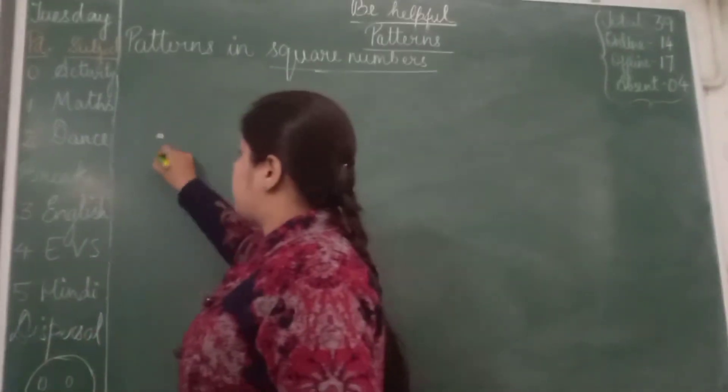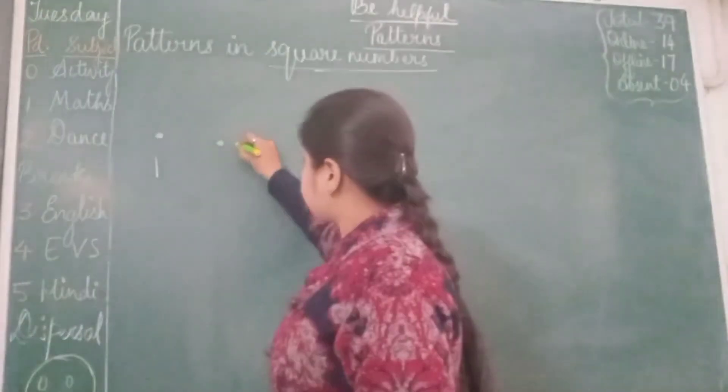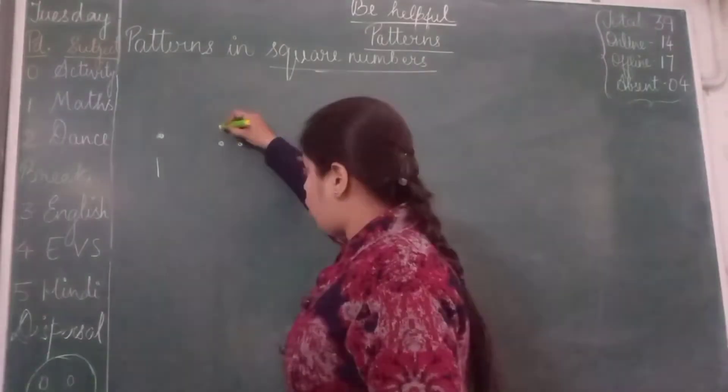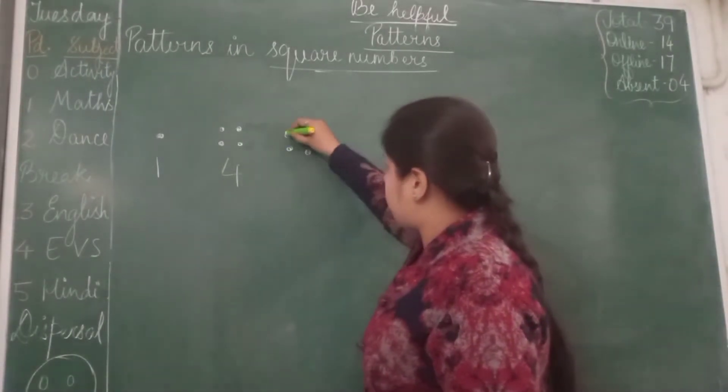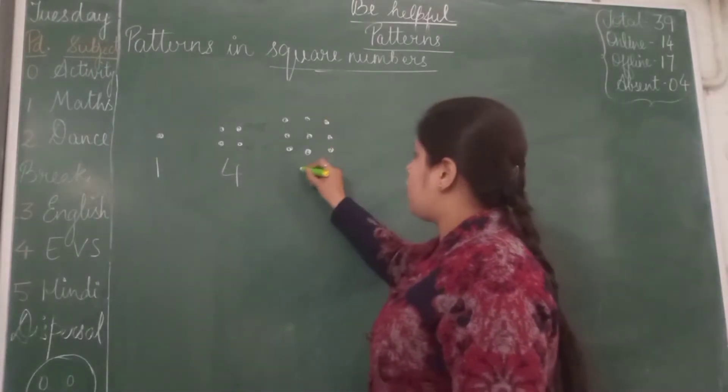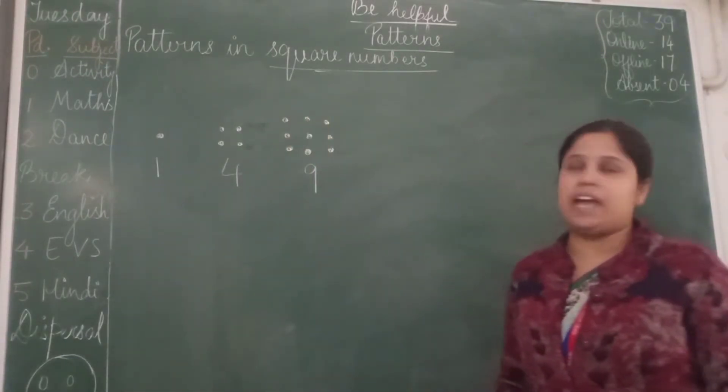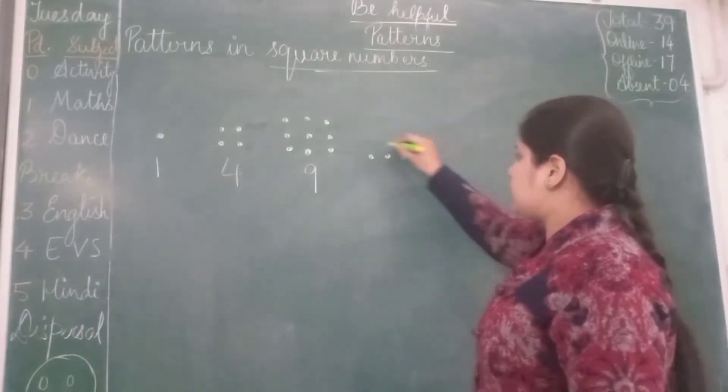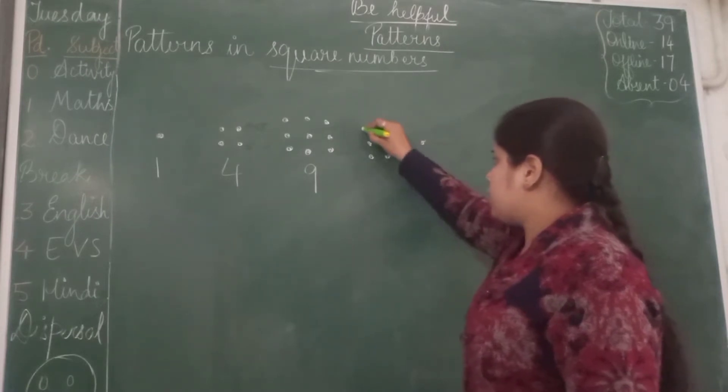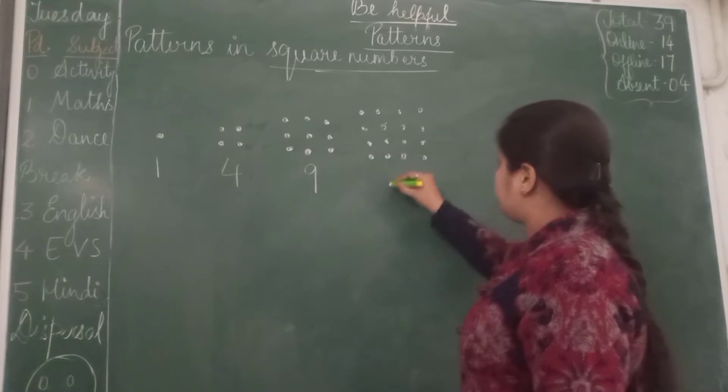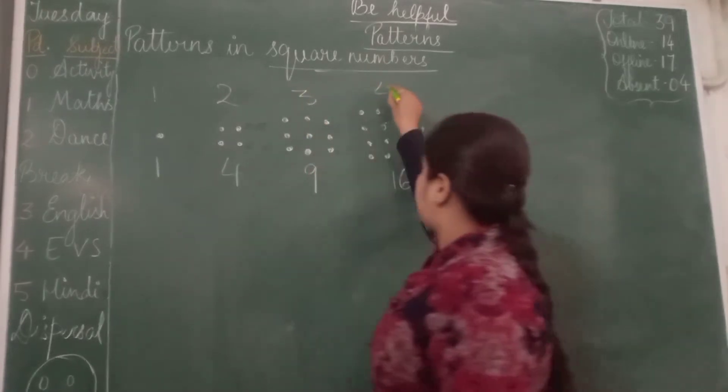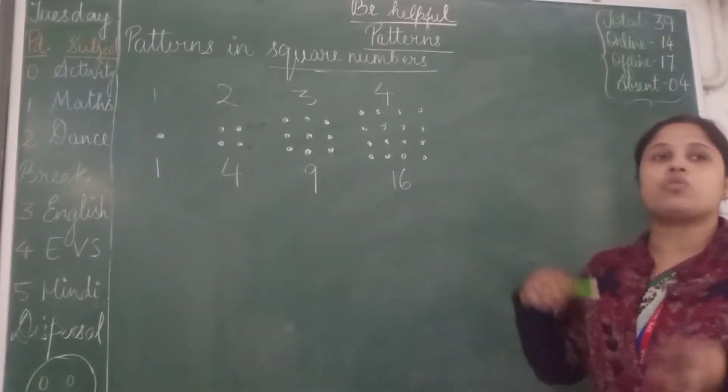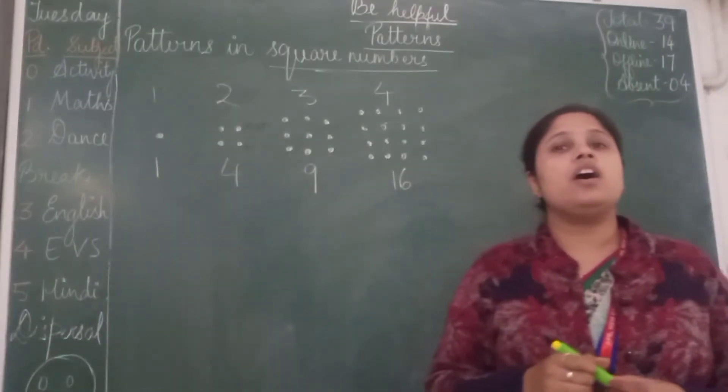There is one more pattern which is followed by square numbers. For example, one dot is 1. Now two dots - as many rows are there, the same number of columns will be there, so it becomes 4. Similarly with 3, as many rows, the same number of columns. It is making a square, which equals 9. Count the total number of dots, it will be 9. Now as many numbers of rows are there, the same number of columns will also be there. This is also a property, this is also a way in which we can find out the square number.